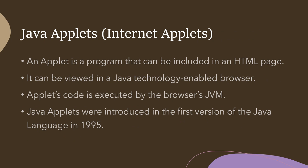Graphics, animations, or images can be viewed if the browser is Java-technology enabled. Almost all modern browsers are enabled because websites contain many applets. Applet code is executed by the browser's JVM, which converts the byte code into machine code that can run in the browser.